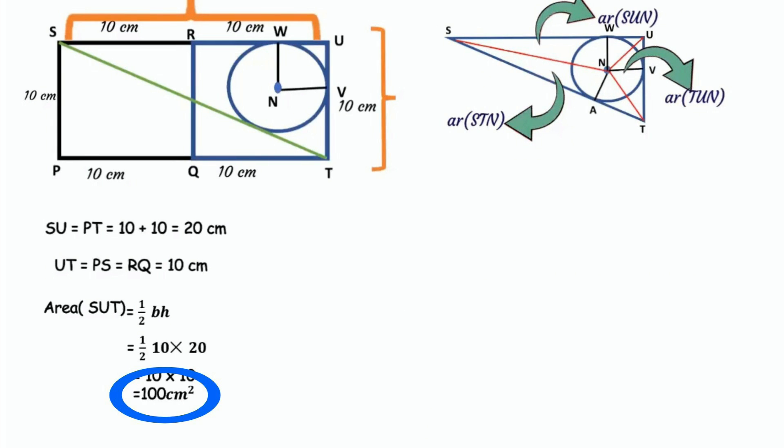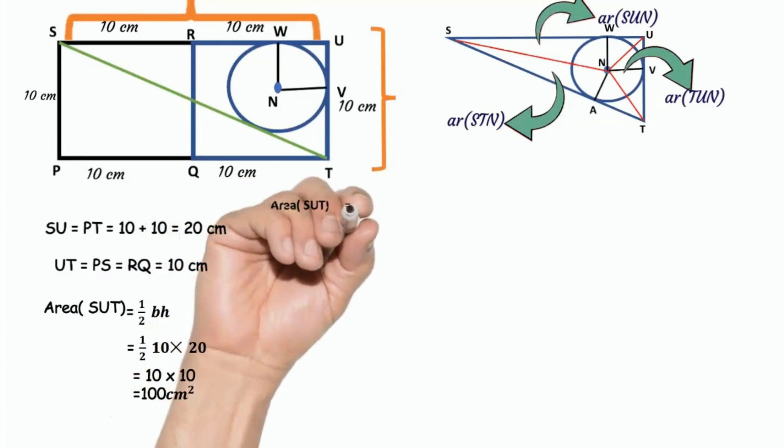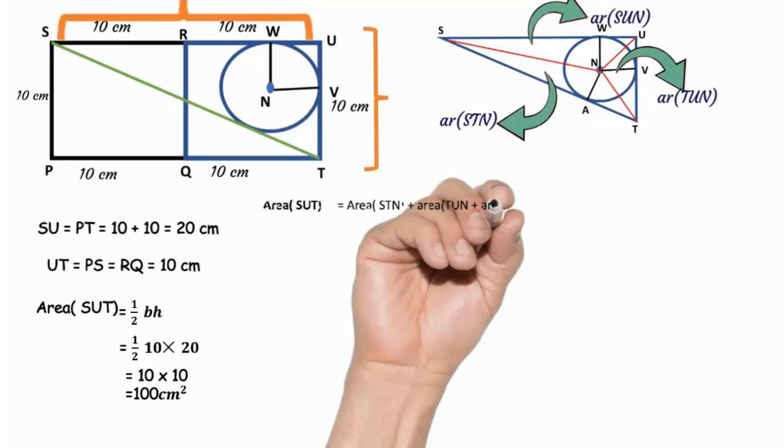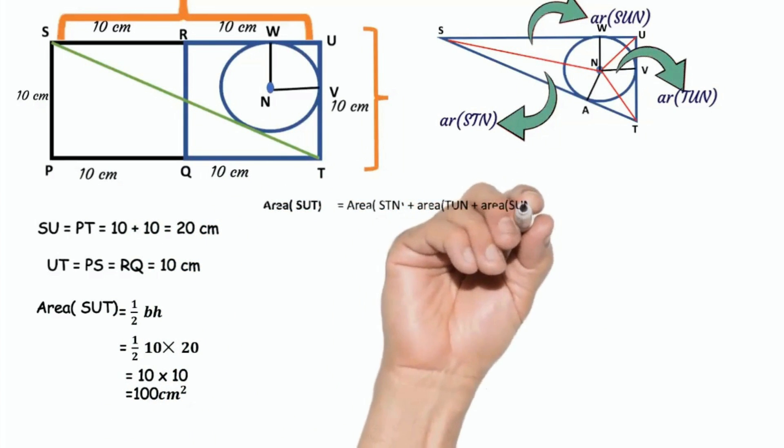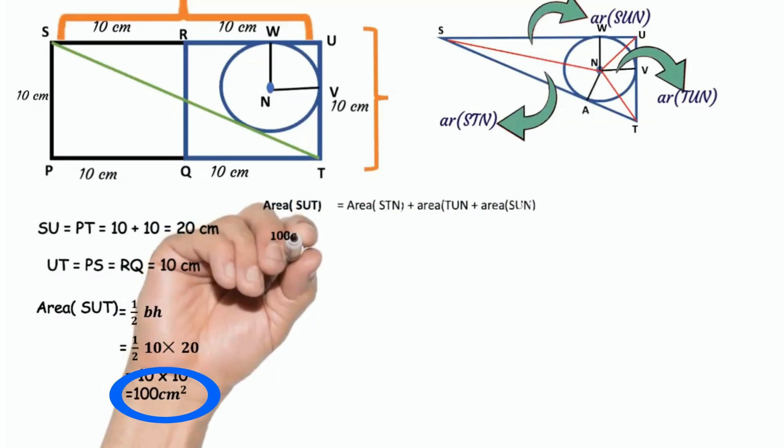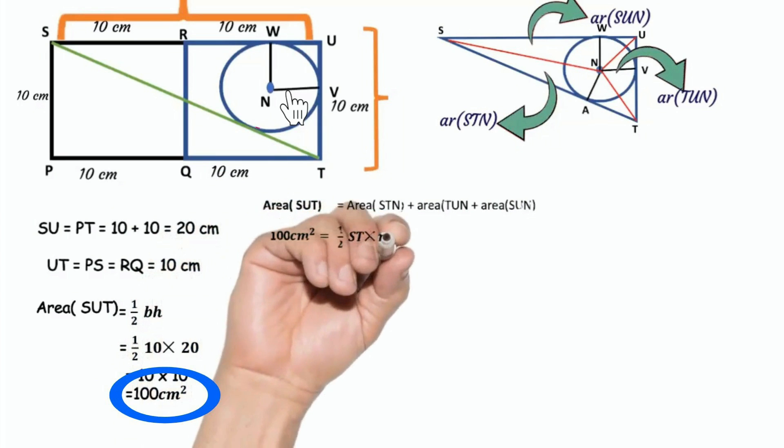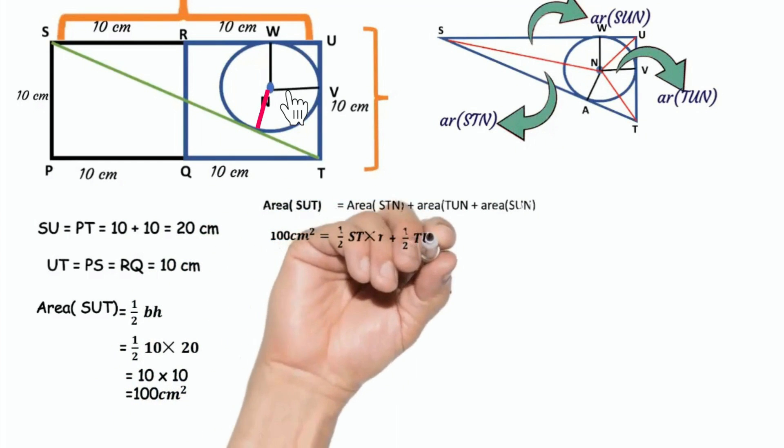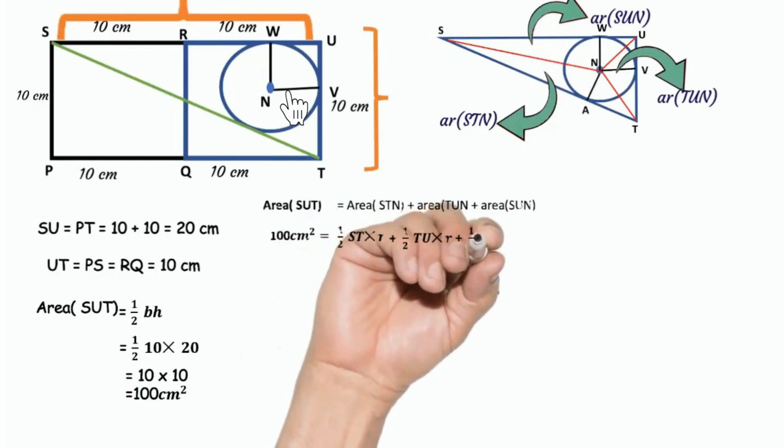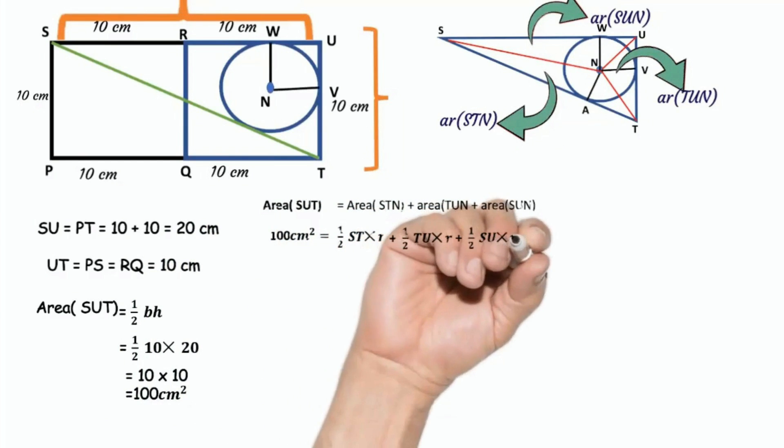Area of SUT equals area of STN plus area of TUN plus area of SUN. Area of SUT equals 100 cm square. 100 cm square equals half into ST into radius plus half into UT into R plus half into US into R. Radius is height, tangent is perpendicular to the radius.